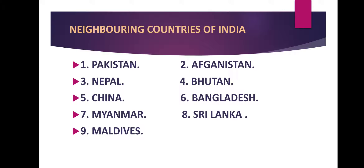In the eastern part, one important country is Bangladesh, which shares a long border with India. The maximum border is shared by West Bengal on the eastern side. Another country sharing a border in the east is Myanmar. So Bangladesh and Myanmar are the two countries sharing a border with India in the eastern part.